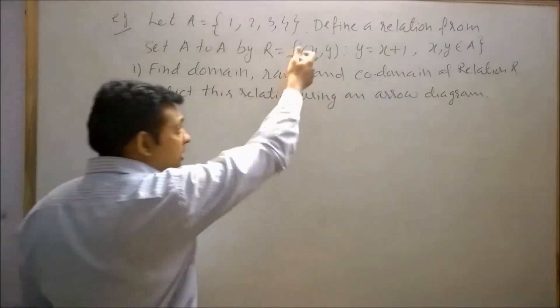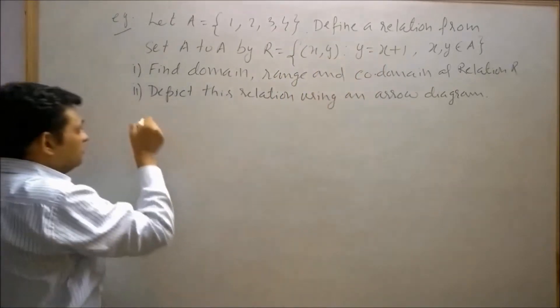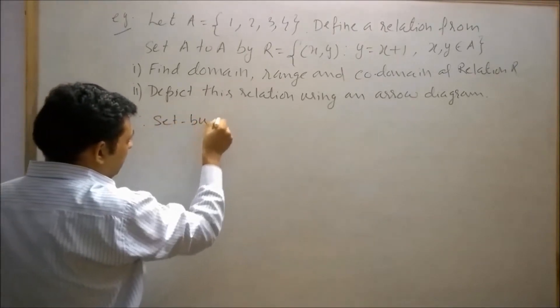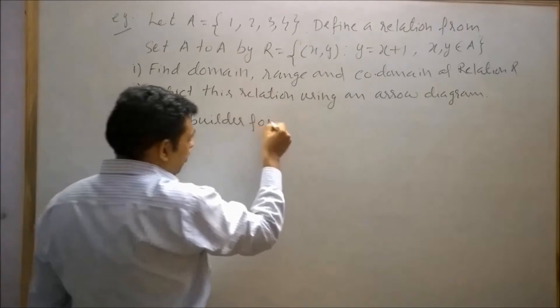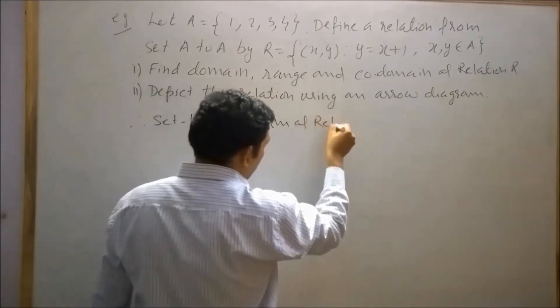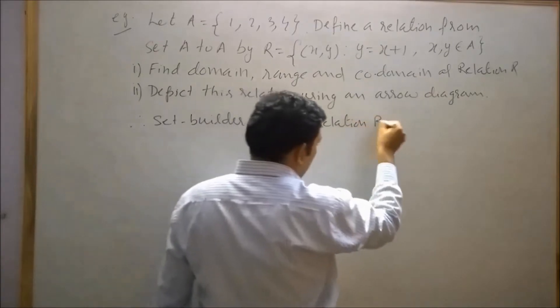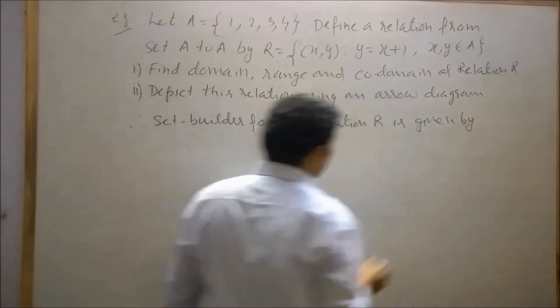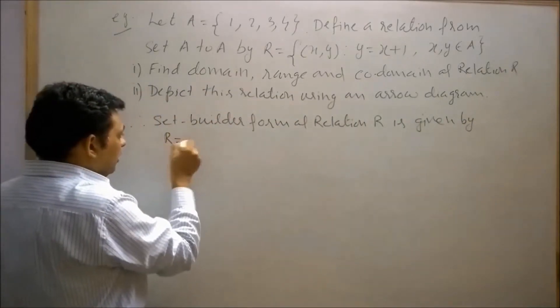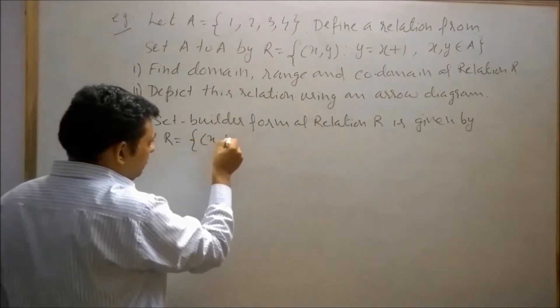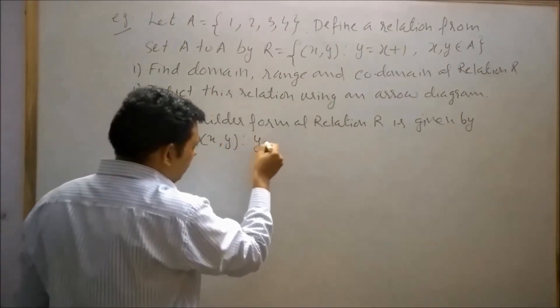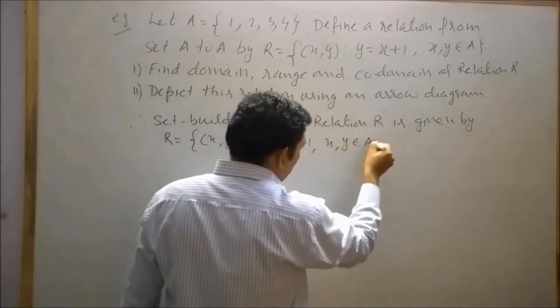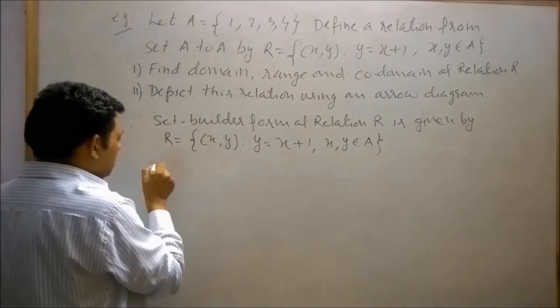Set-builder form of relation R is given by R = {(x,y) such that y = x+1 where x and y belongs to set A}. Therefore roaster form of this relation is as follows: